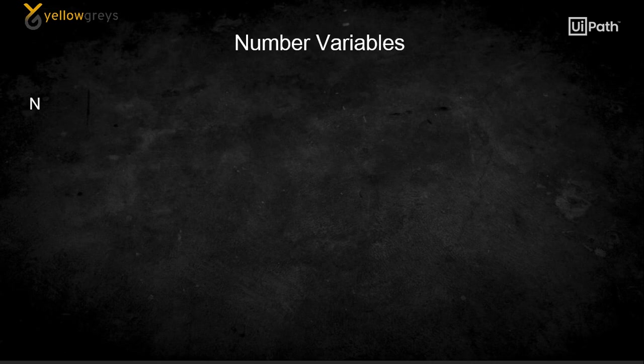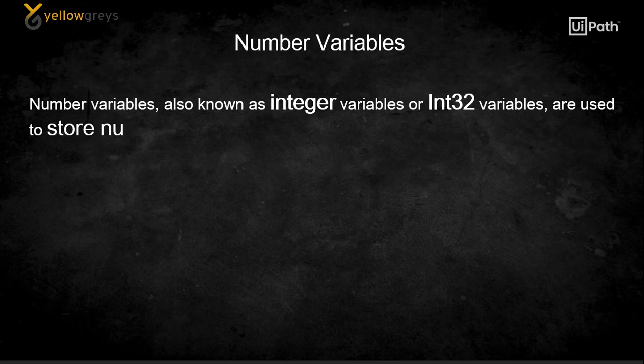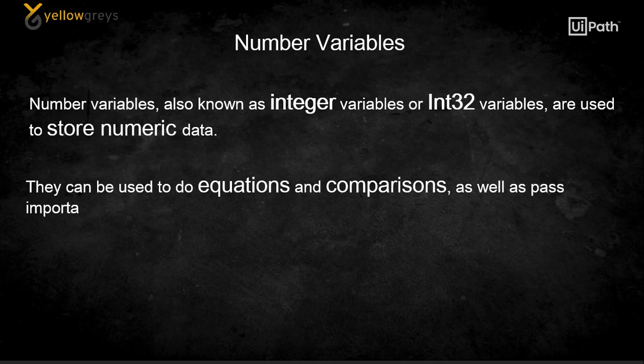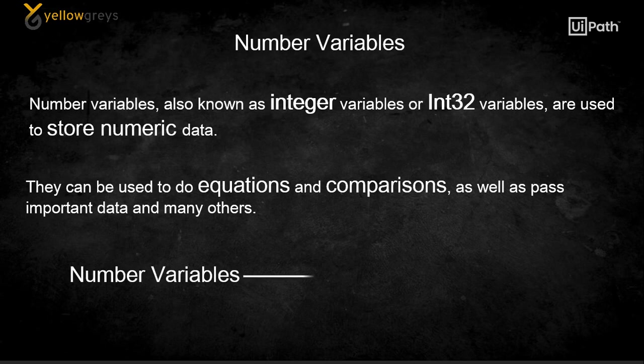Number variables, also known as integer variables or int32 variables, are used to store numeric data. They can be used to do equations and comparisons as well as pass important data and many others.